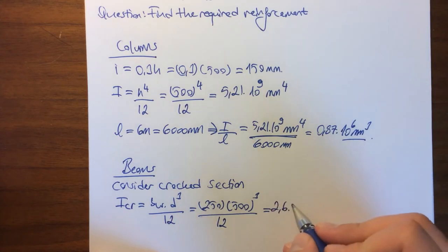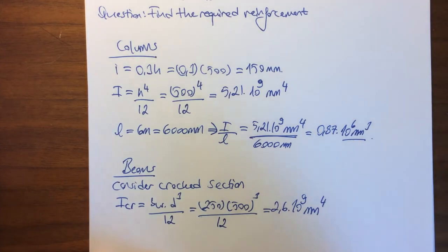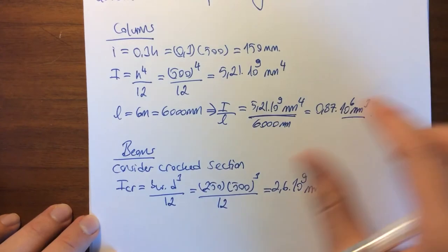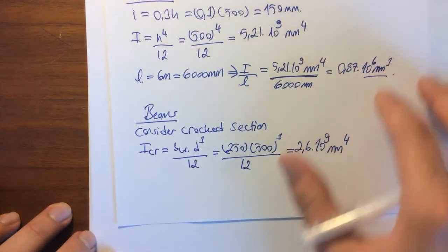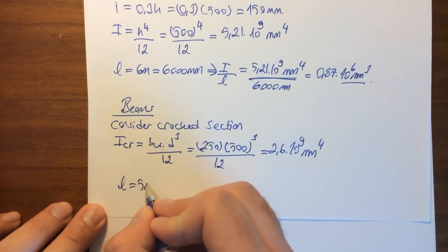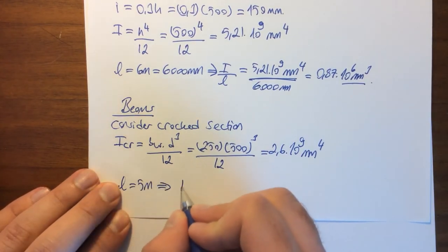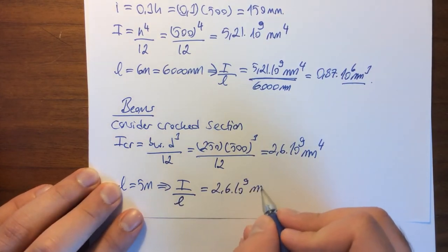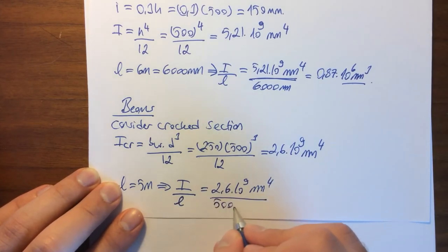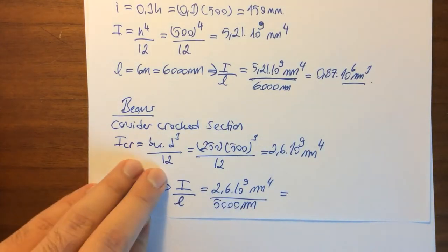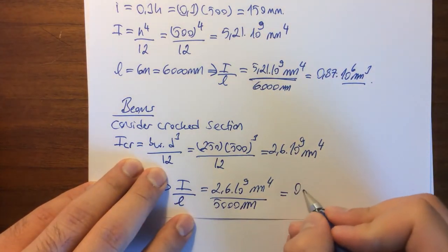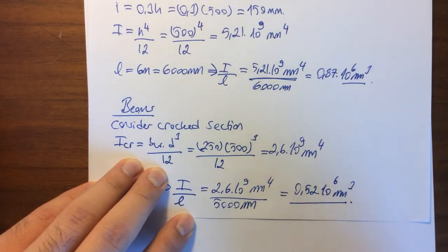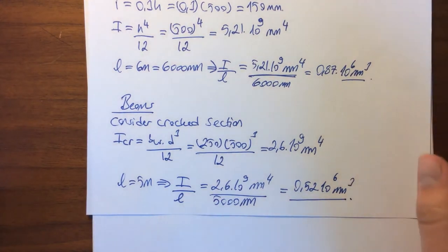Since we also know that the length of the beams is 5 meters, which equals 5,000 millimeters, I over L becomes 2.6 × 10^9 millimeters to the fourth divided by 5,000 millimeters, which yields a result of 0.52 × 10^6 millimeters cubed. So we got the I over L ratio both for the beams and the columns.